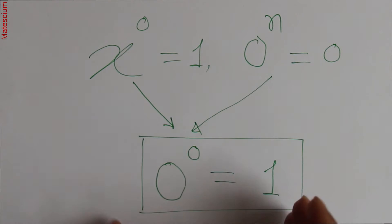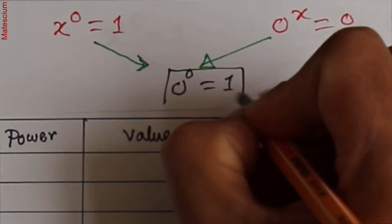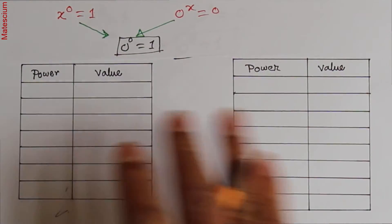But I want to give you detailed explanation step-by-step why 0 to the power 0 is equal to 1. That I am going to explain now here in this chart.